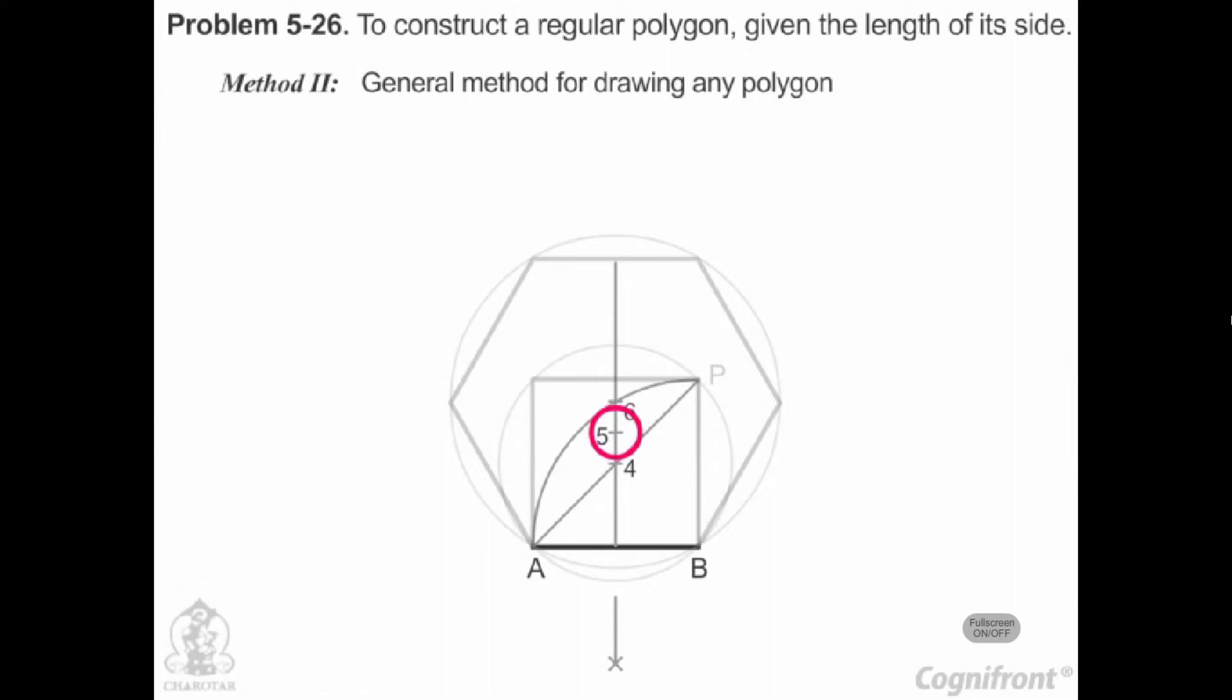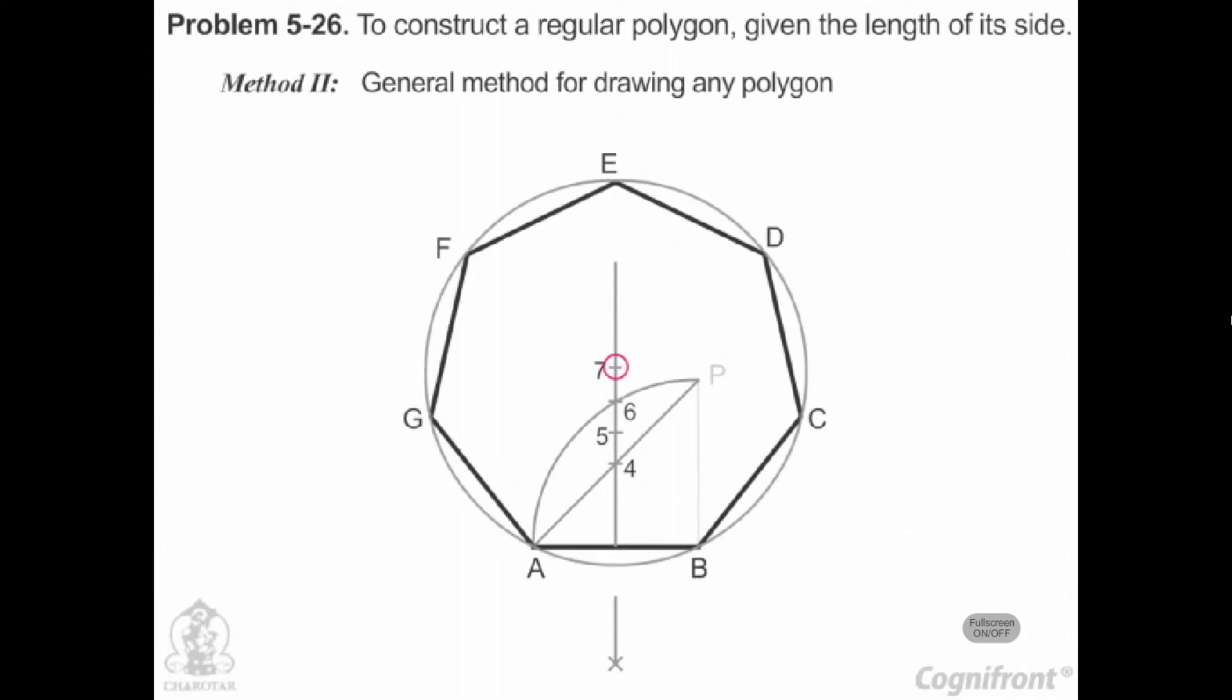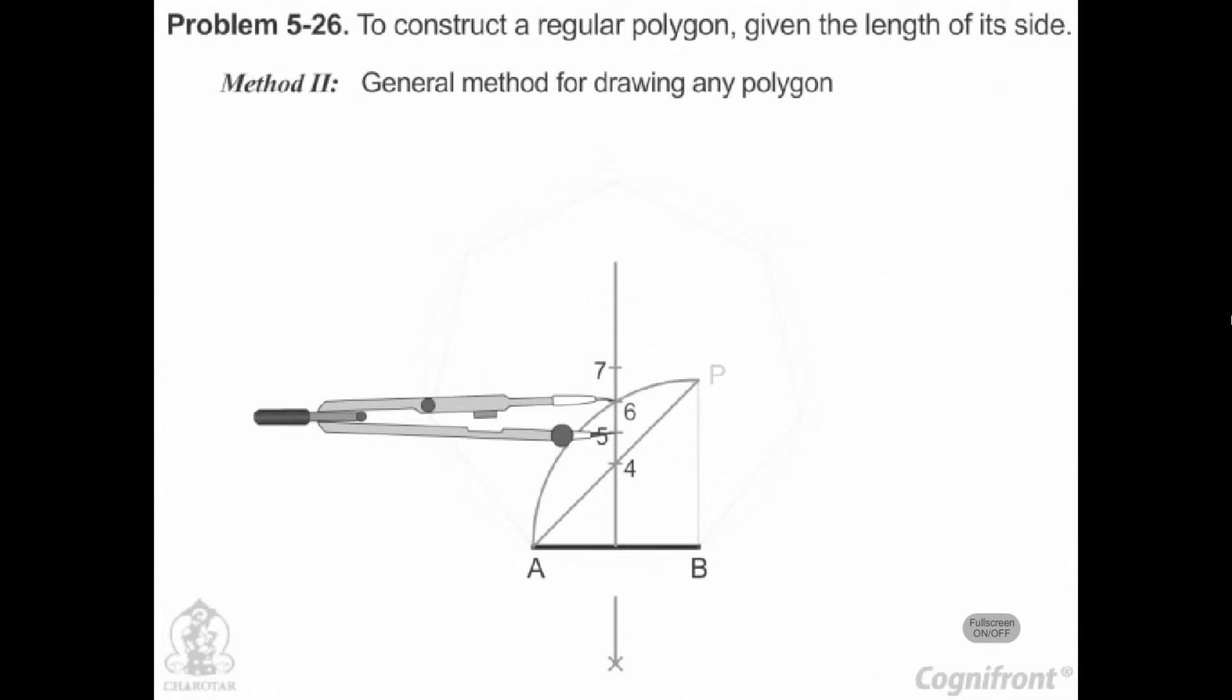The midpoint 5 of the line 46 is the center of the circle of the radius A5 in which a regular pentagon of side equal to AB can be inscribed. To locate center 7 for the regular heptagon of side AB, step of a division 6, 7 equal to the division 5, 6.